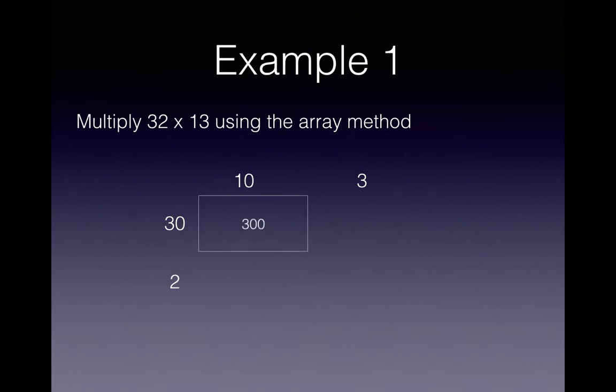So the 30 by the 10 will give me 300, the 30 by the 3 will give me 90, the 10 by the 2 which would be the area of the bottom left hand corner would be 20, and the 2 by the 3 would give me an area of 6.